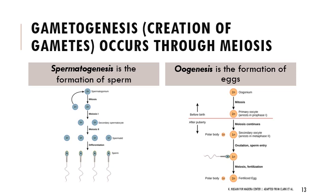Spermatogenesis and oogenesis happen at different rates. The first part of oogenesis happens before an individual is even born — if you're pregnant and your baby produces eggs, she'll have eggs in her body, but they're not fully formed yet. That finalization happens after puberty begins, with eggs maturing one at a time and being released on a monthly basis.